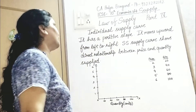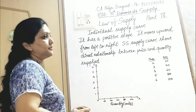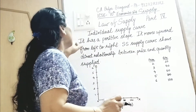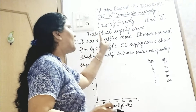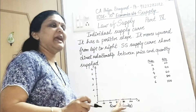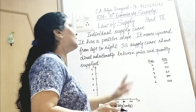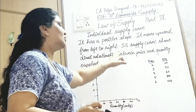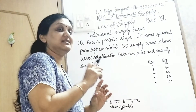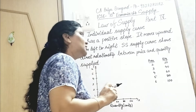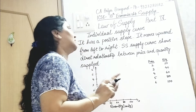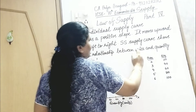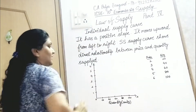Part 4: We will understand how to make an individual supply curve. The individual supply curve has a positive slope — all supply curves have a positive slope — if it moves upward from left to right. The SS supply curve shows a direct relationship between price and quantity supplied.